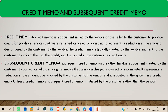So in a credit memo, both price and quantity are reduced. You are reversing the material as well as the price — both things are being reversed. So in a credit memo, both price and quantity will be reduced.